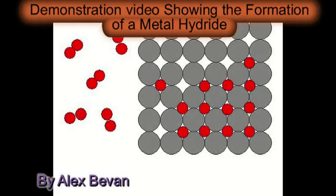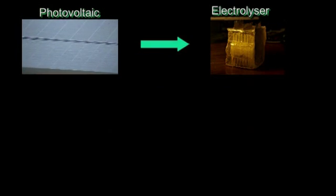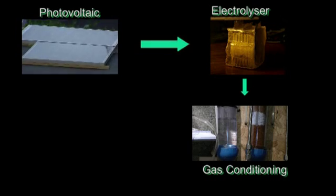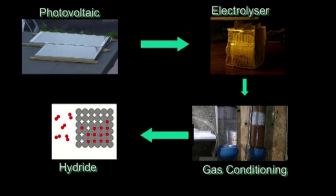This is a demonstration video showing the formation of a metal hydride. Renewable solar power is going to be used to generate hydrogen gas from electrolysis that we are going to use in the formation of this metal hydride.